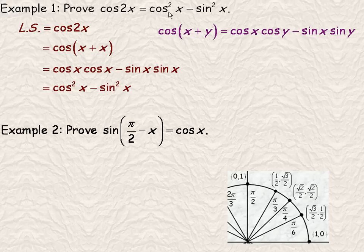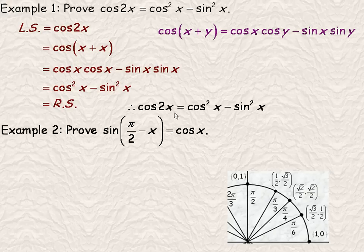We wanted to show it's equal to cos²x - sin²x, and that's exactly what we have. So this is what is on the right side of the identity, and so we're finished. And so we would make a concluding statement, stating therefore cos 2x = cos²x - sin²x.